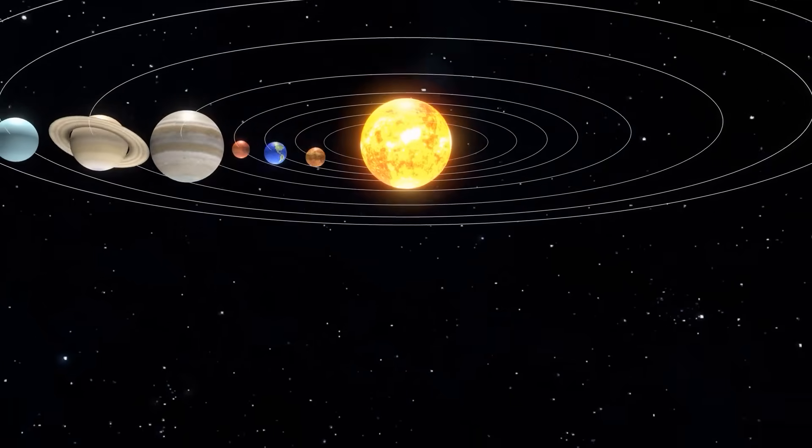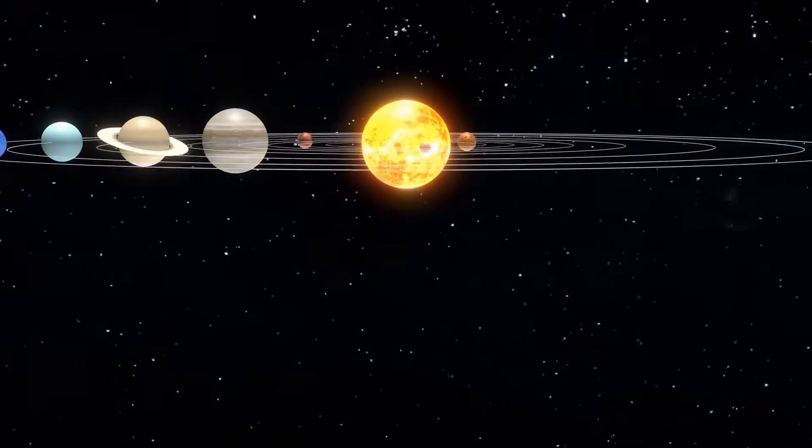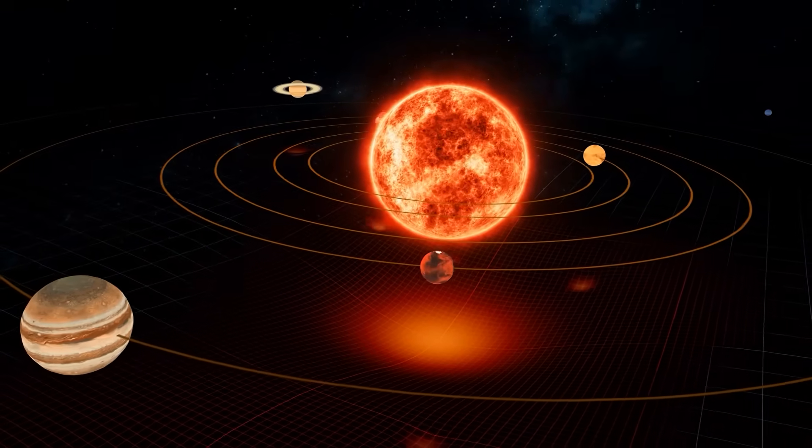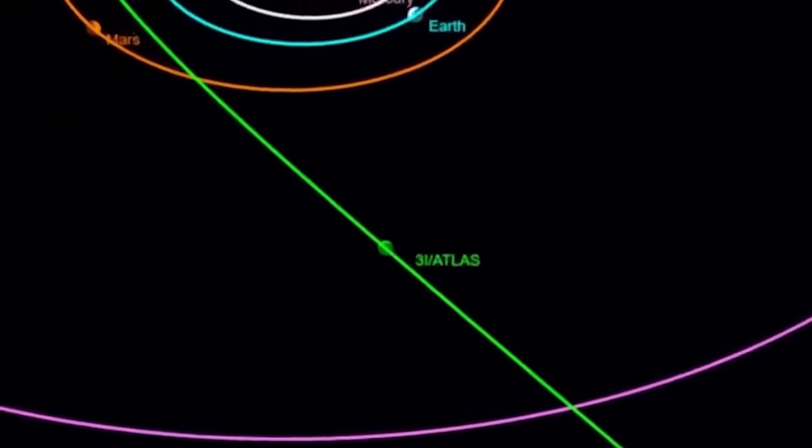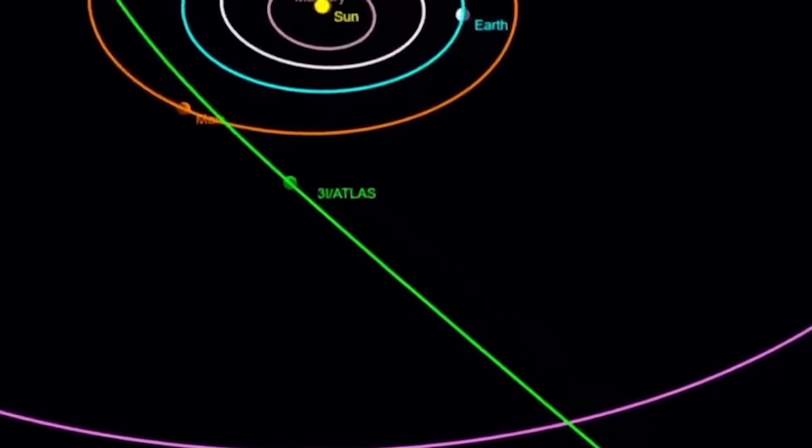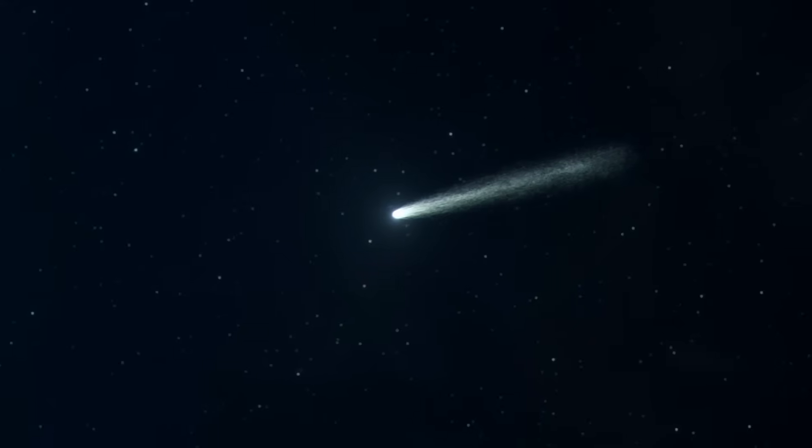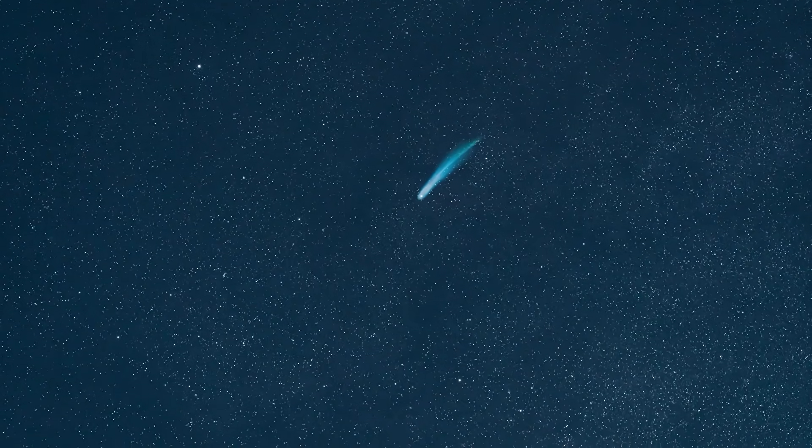You see, objects in our solar system are gravitationally tied to our sun. They follow predictable elliptical orbits. But this thing was on a hyperbolic trajectory, a fancy way of saying it was moving too fast to be caught. It was a cosmic cannonball, destined to shoot through our system and never return.